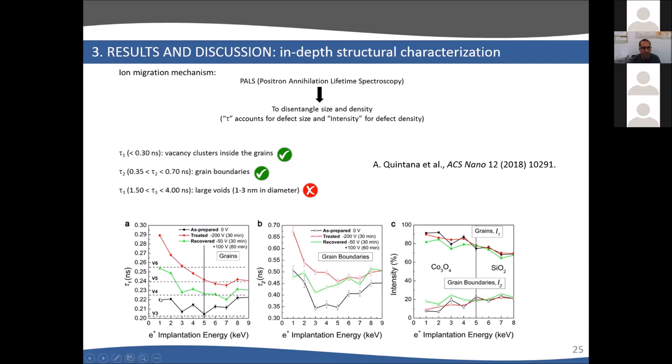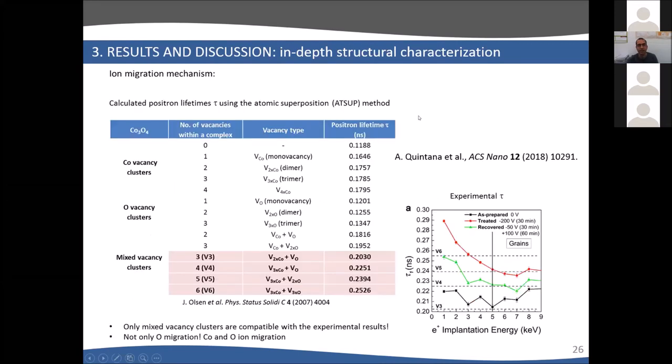Depending on this time, you can have vacancies inside the grains, at grain boundaries, or large voids. From our experiments, we had vacancy clusters inside the grains or at grain boundaries. The as-prepared material has very low annihilation time. When we apply negative 200 volts, the annihilation time increases, so we have larger vacancies. After applying positive voltage, you recover a little bit, decreasing the annihilation time again. Our collaborators did calculations using the atomic superposition method. From this and the times we measured experimentally, we could determine we have mixed types of vacancies involving both cobalt and oxygen. This indicates that during voltage actuation, not only oxygen moves, but also cobalt cations are able to diffuse.